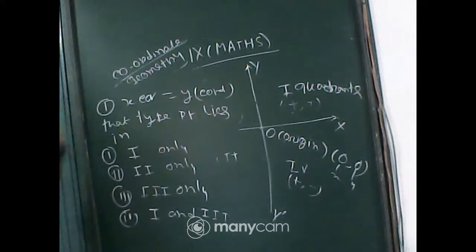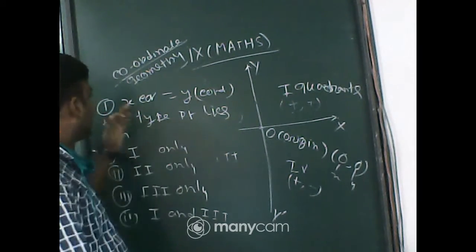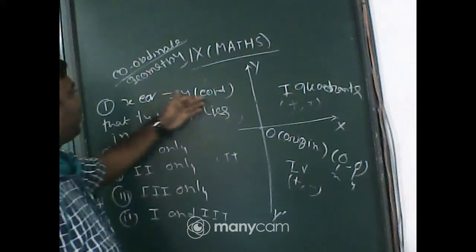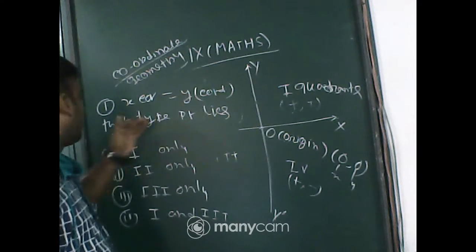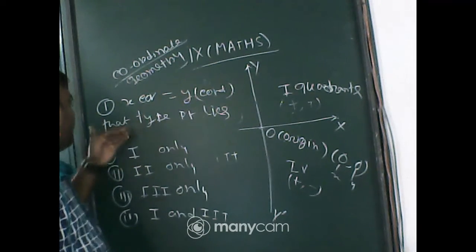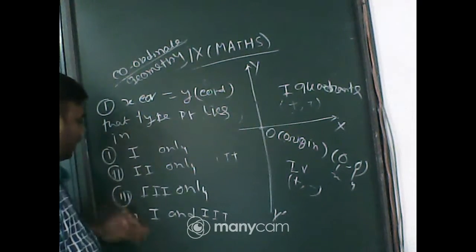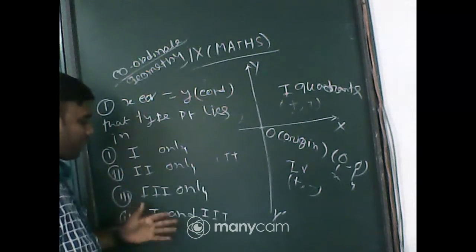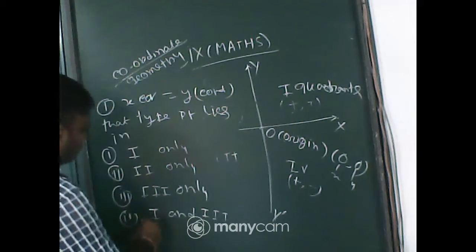Okay, so that question — again I am discussing that question — that x coordinate equal to y coordinate, that type of points lies in first quadrant, second, third and 1 and 4. So the right answer is 1 and 3.